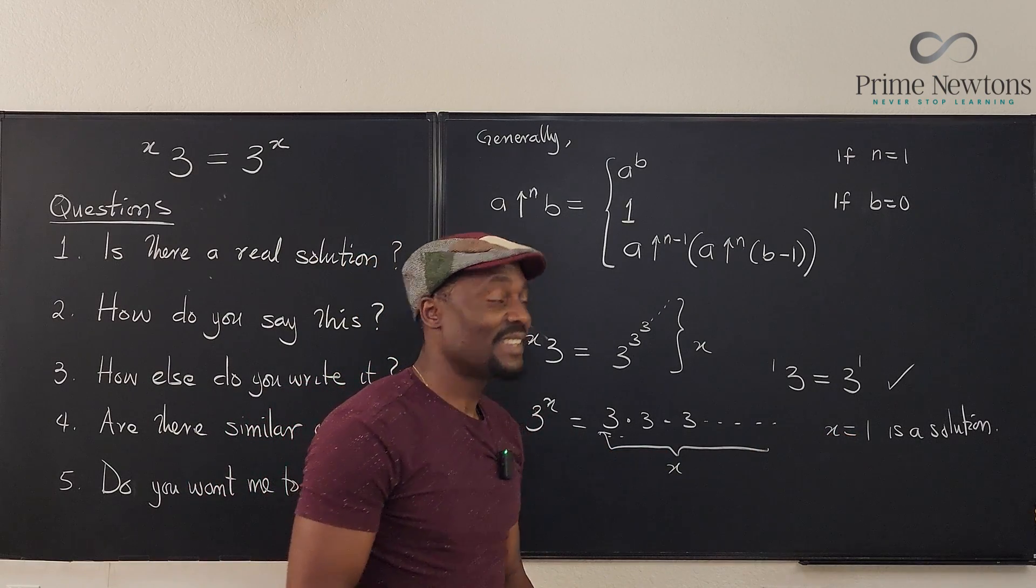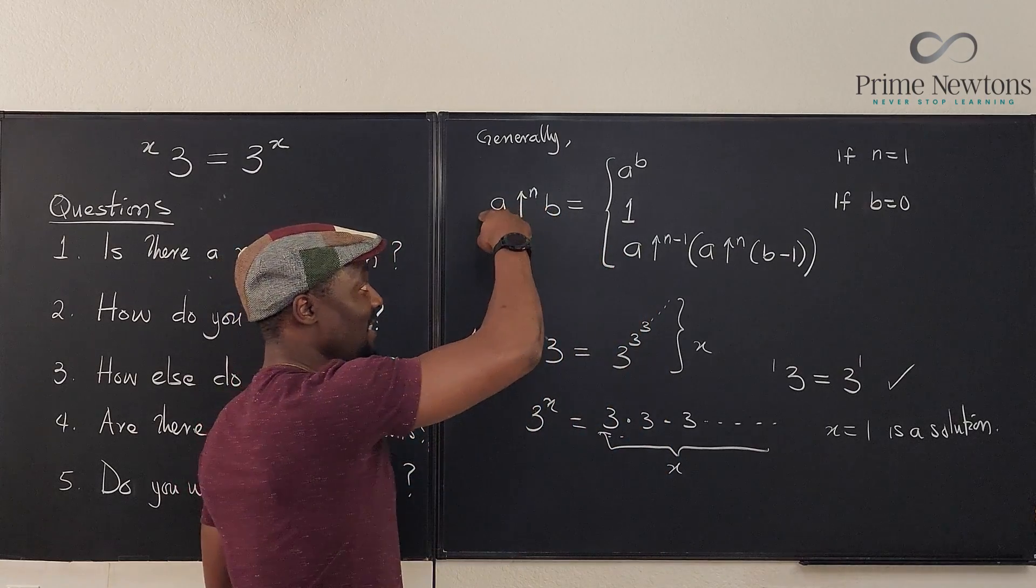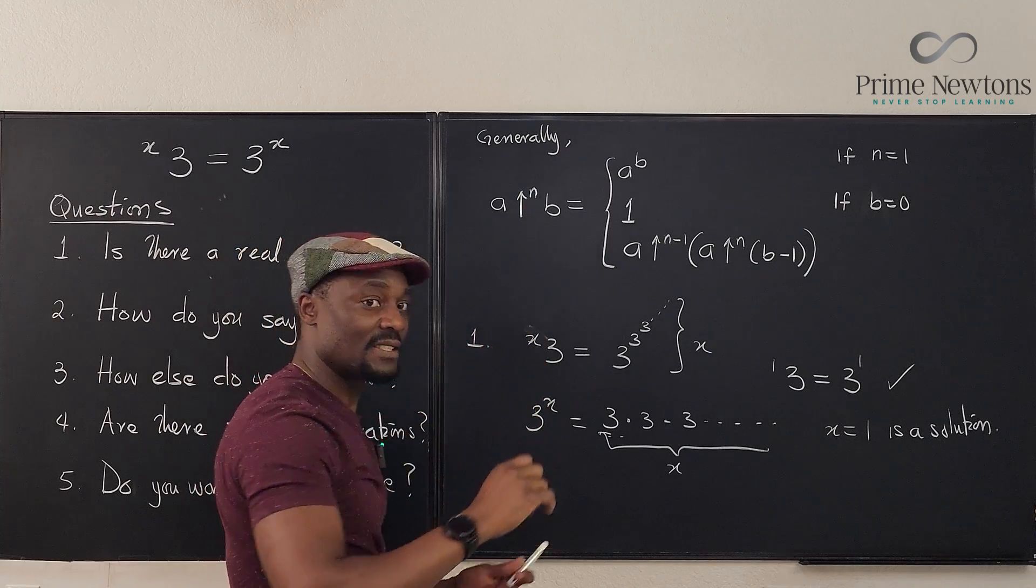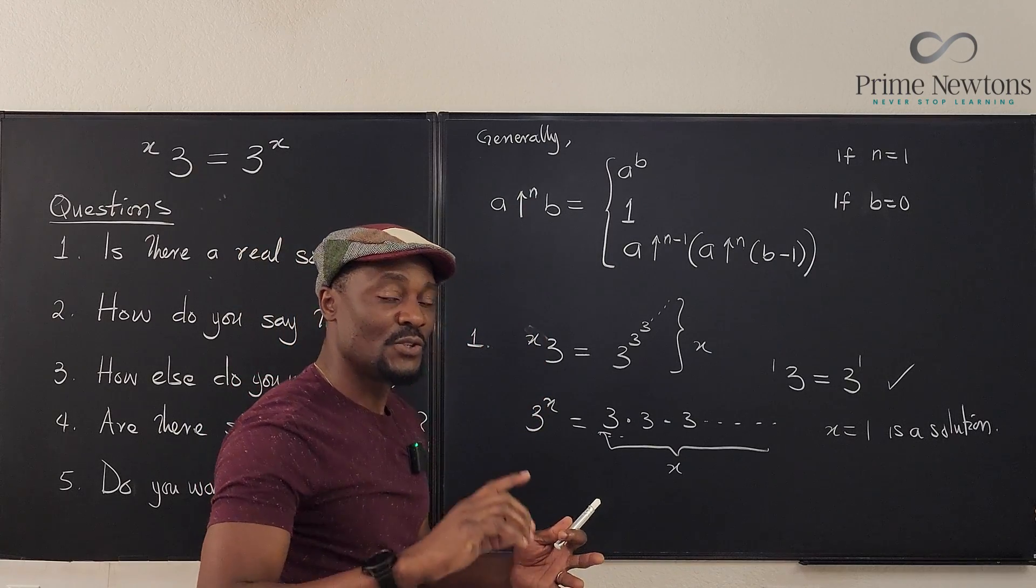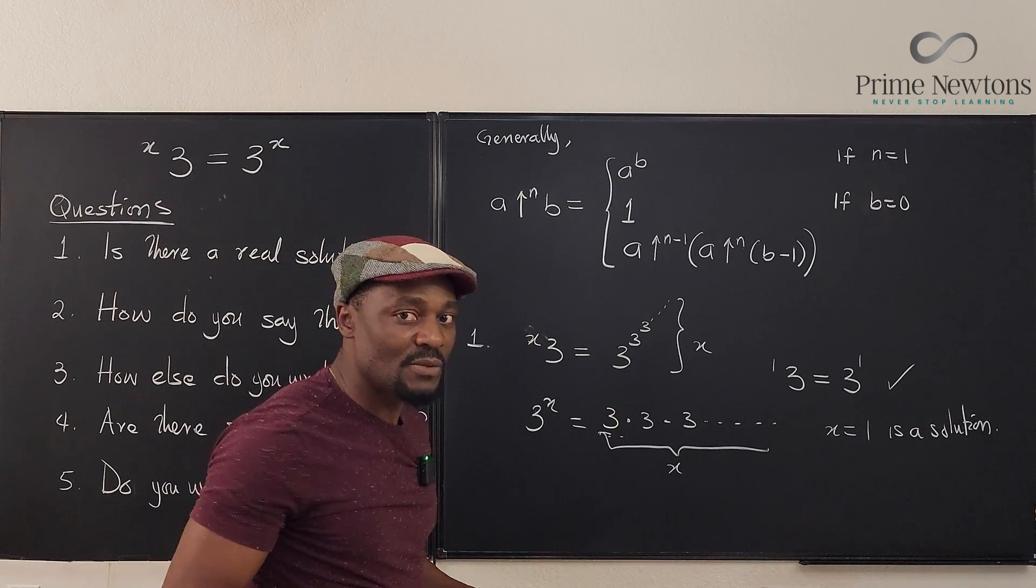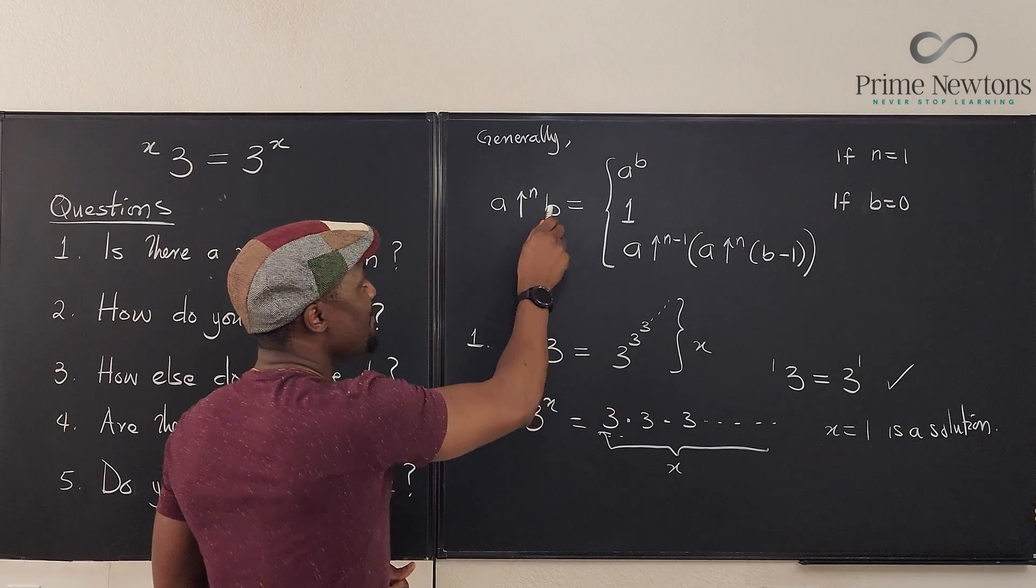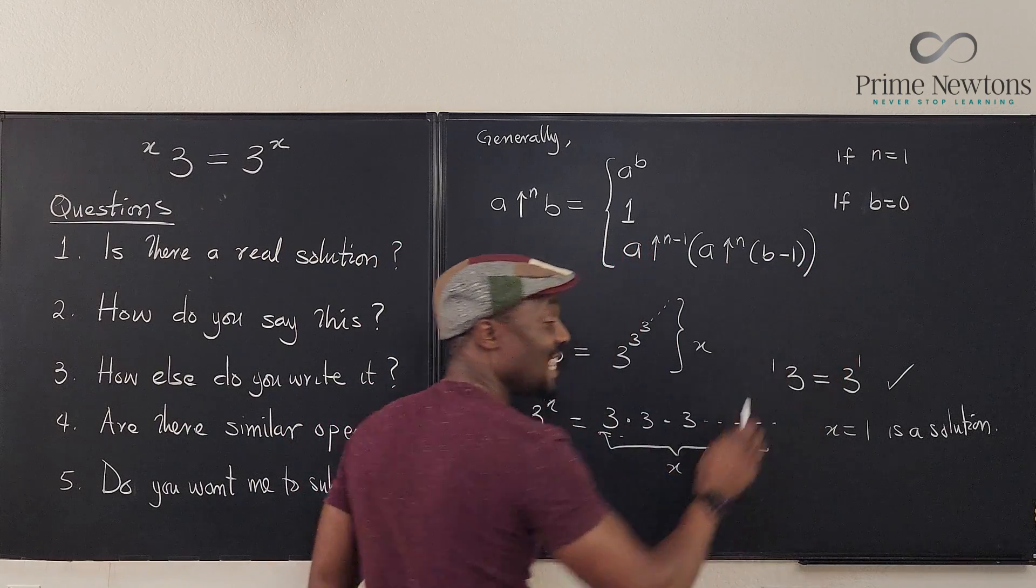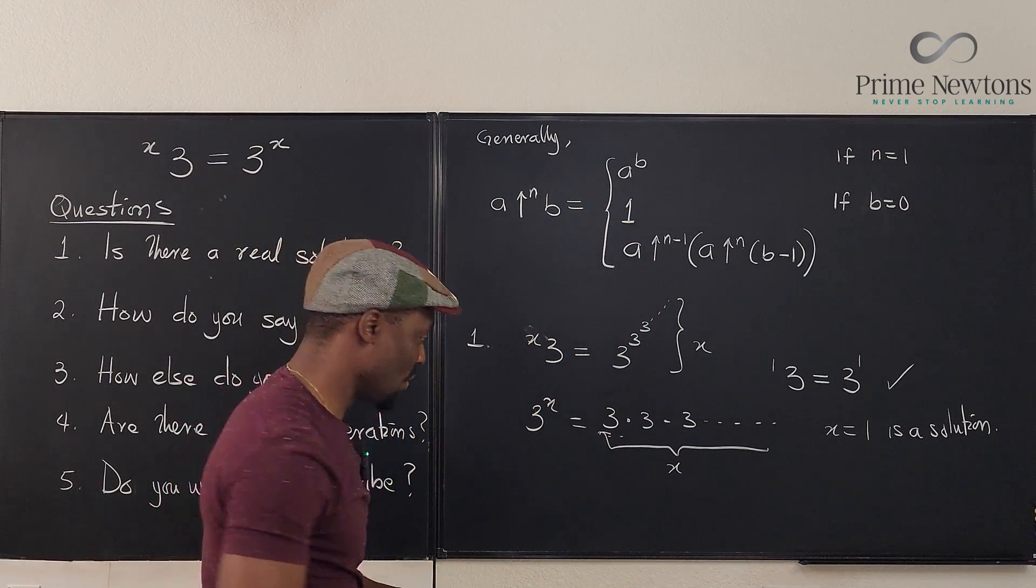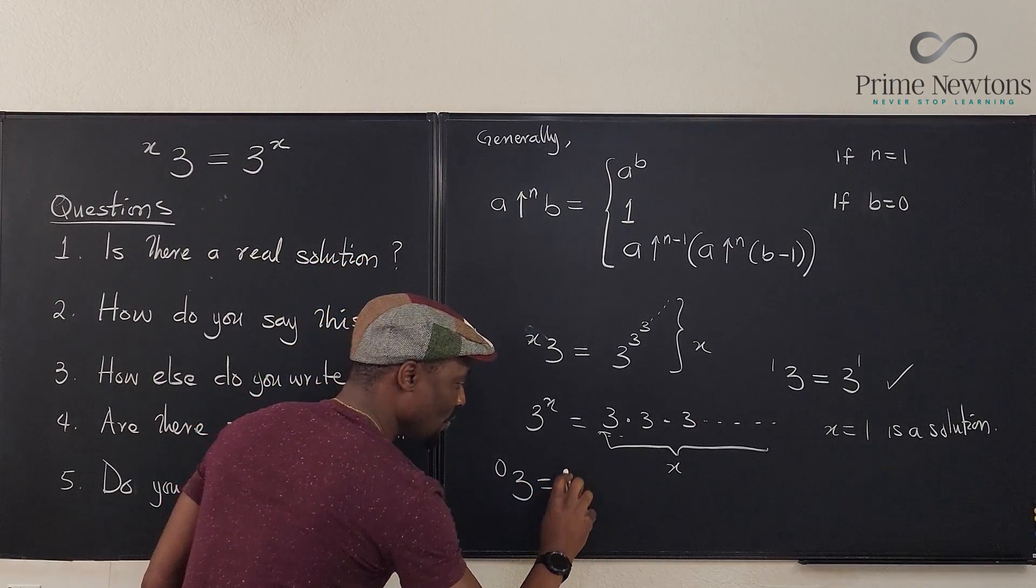The second one is when X is equal to zero. So if you come here by definition, it does not matter what this is, as long as it is from exponentiation to tetration to pentation, whatever it is, as you go higher, starting from exponentiation. If this is equal to zero as described in the definition, then this must be equal to one. So if you write this, it must be equal to one.